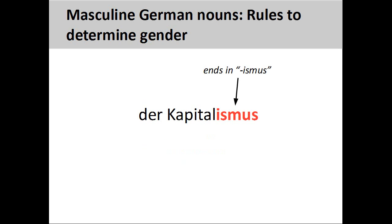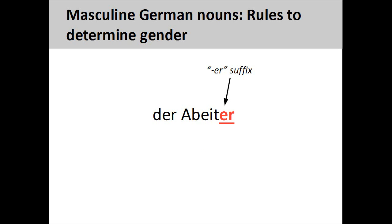Nouns ending in '-ismus,' such as 'Kapitalismus' (capitalism), are masculine. Nouns ending in '-er' that are derived from verbs are also masculine. For example, the noun 'Arbeiter,' meaning worker, is derived from the German verb 'arbeiten,' meaning to work.